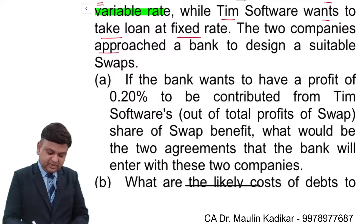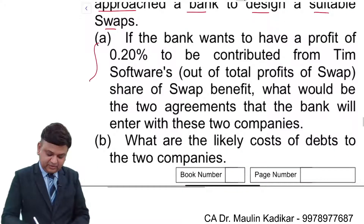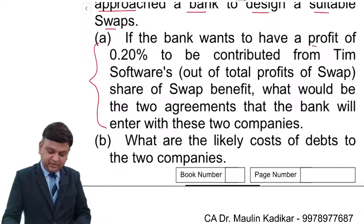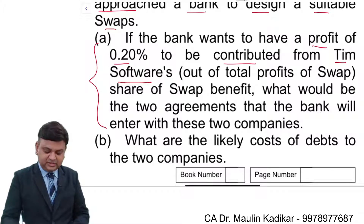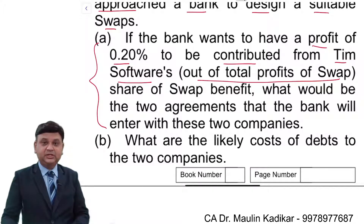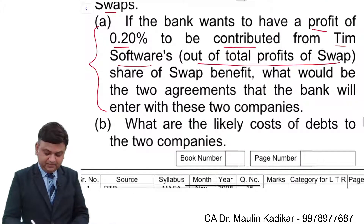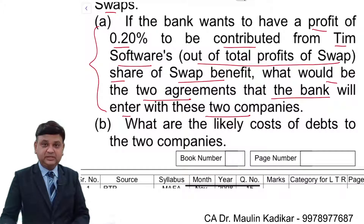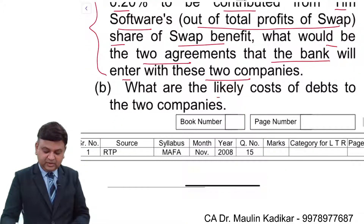The two companies approach a bank to design a suitable swap. If the bank wants to have a profit of 0.2% to be contributed from Team Software's share of the total swap benefit, what would be the two agreements that the bank will enter with these two companies? And what are the likely costs of the debt to the two companies?